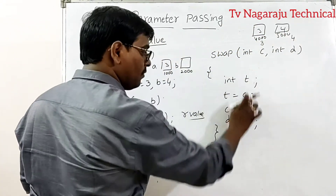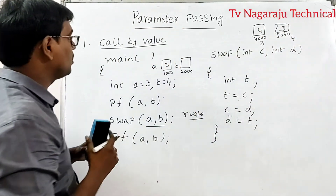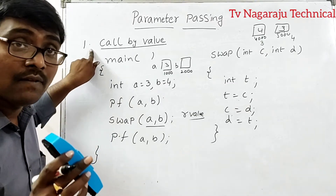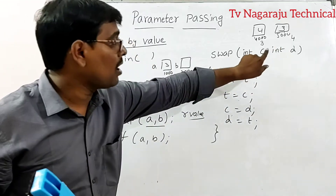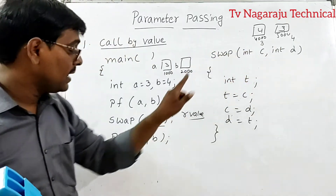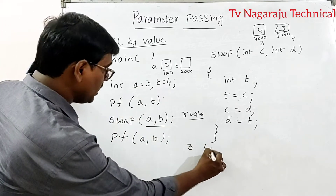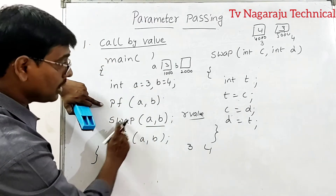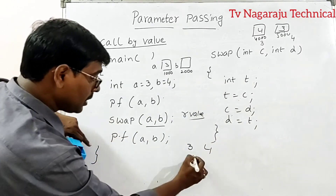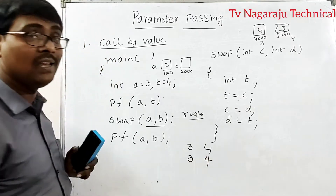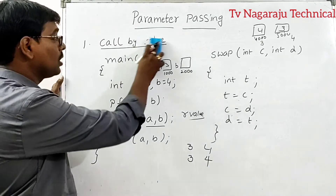After performing the swap operation inside the procedure, the values at those local locations are changed. But when control returns back, the output of a and b is still 3 and 4, unchanged. This is call by value.